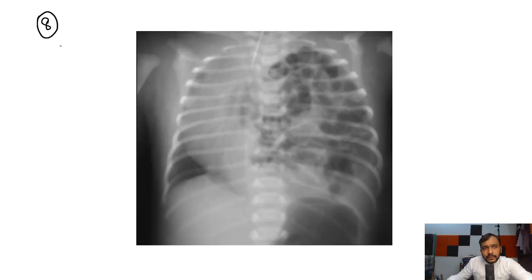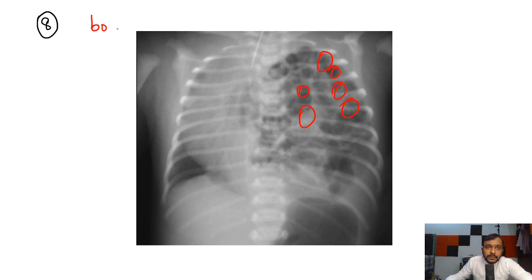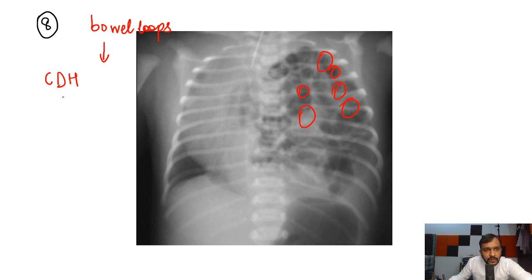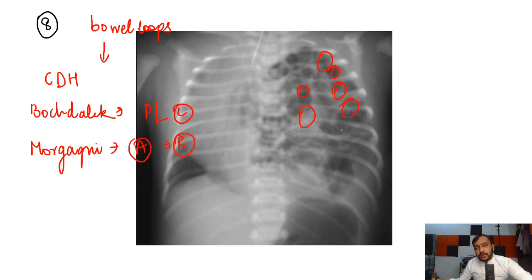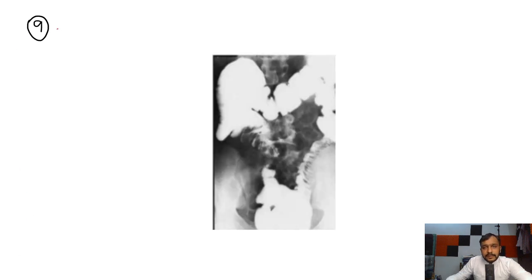In this case you can see multiple cystic cavities within the left lung and they appear like bowel loops. This is a case of congenital diaphragmatic hernia. Remember: Bochdalek hernia most commonly occurs in the posterior lateral part on the left side, whereas Morgagni hernia occurs in the anterior part on the right side. Since this hernia is on the left side, it is a Bochdalek hernia.